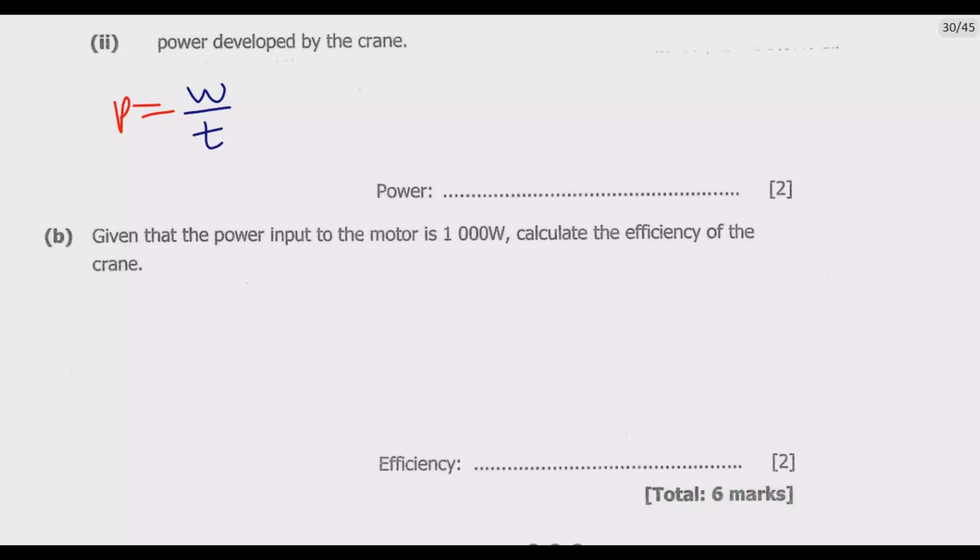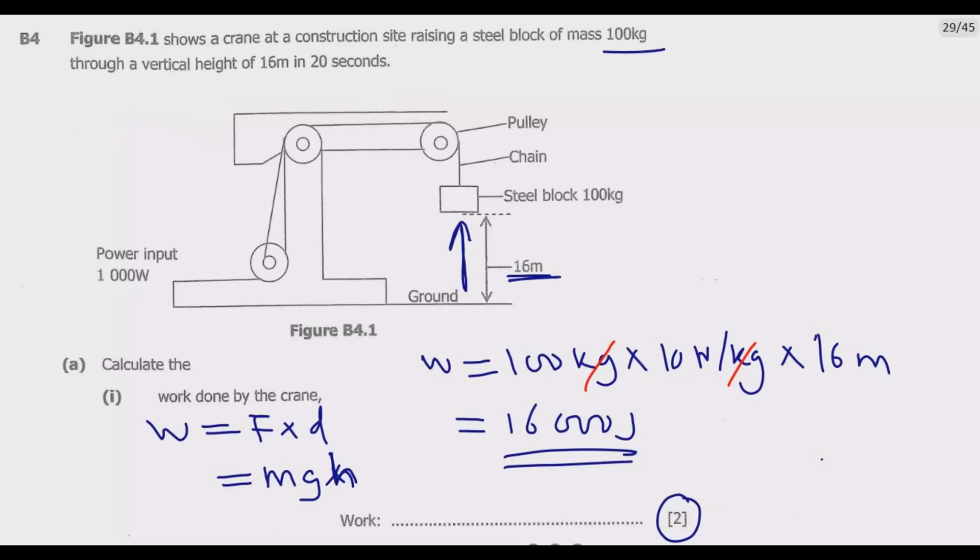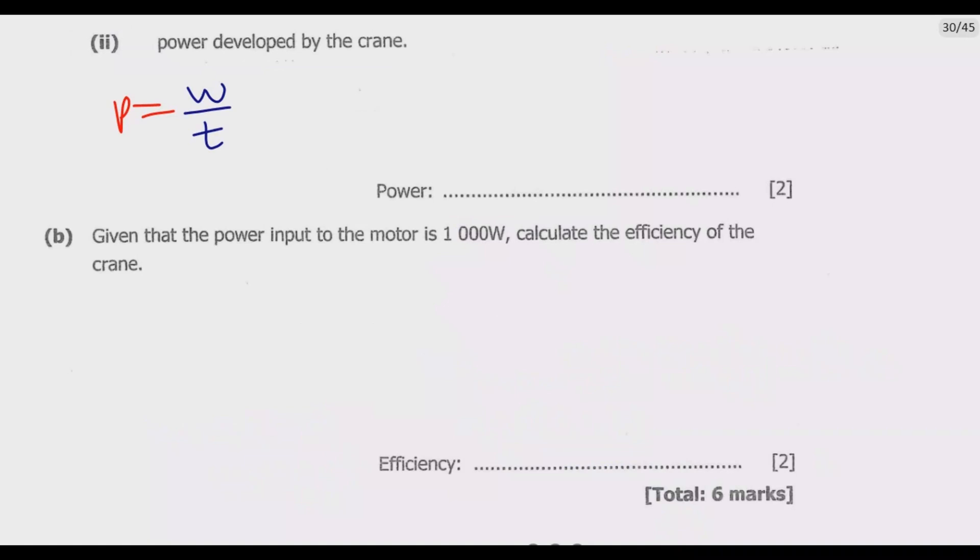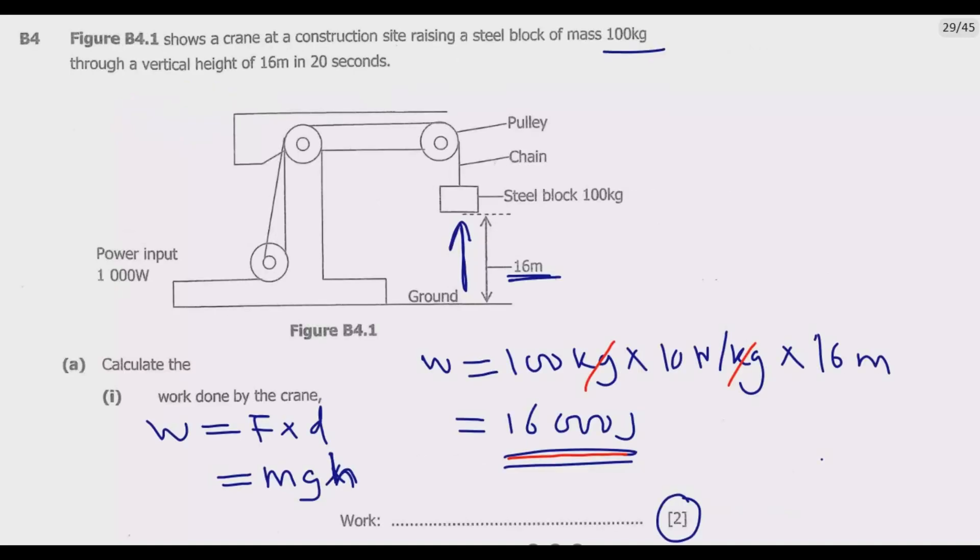We need to ensure that work done is correctly calculated. If you don't calculate it correctly, you mess up the next equation. Work done should be in joules: 16,000. This is done in 20 seconds - remember time should be in seconds.